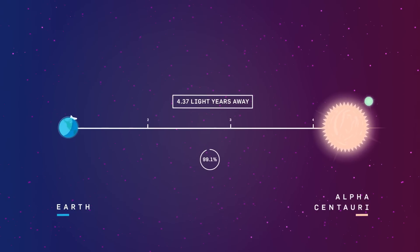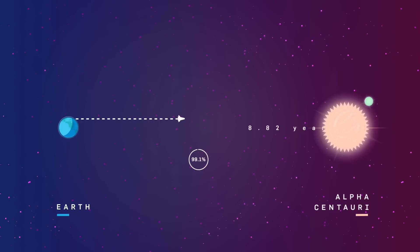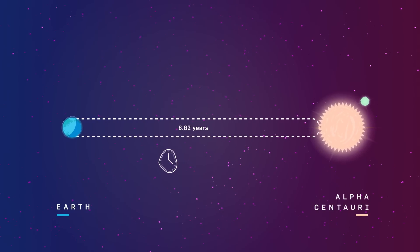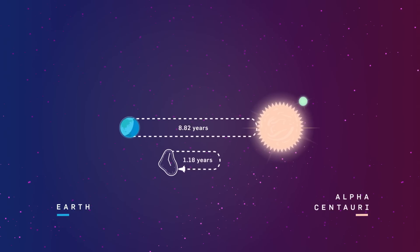Moving at 99.1% of the speed of light, it would take 8.82 years to get there and back, as measured by an Earth observer. However, due to time dilation, the astronaut would experience a round-trip journey of just over one year.